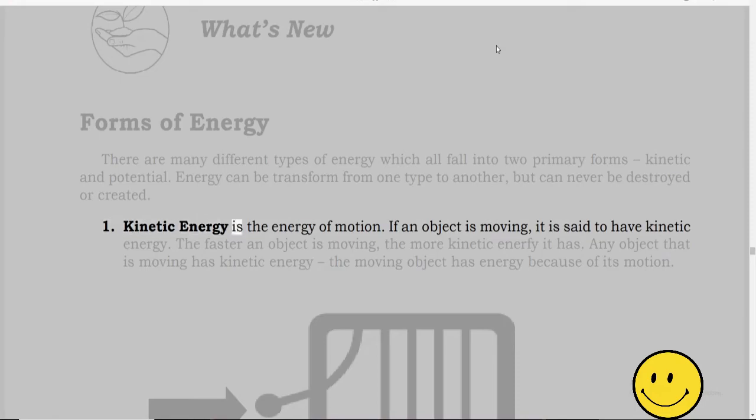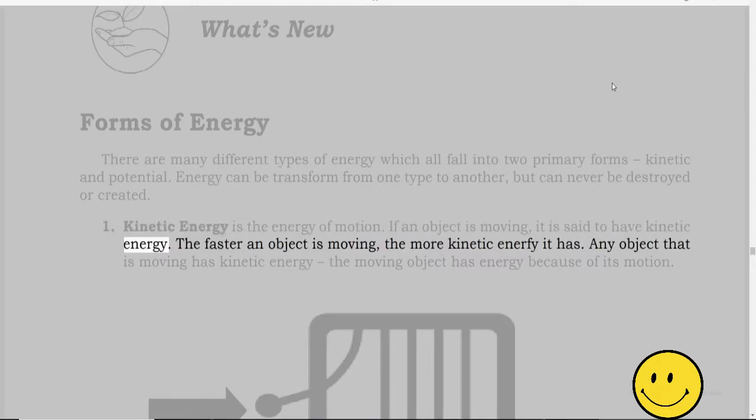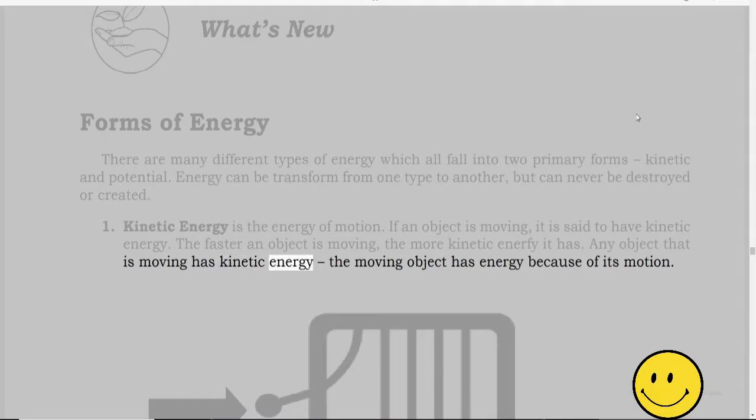Kinetic energy is the energy of motion. If an object is moving, it is said to have kinetic energy. The faster an object is moving, the more kinetic energy it has. Any object that is moving has kinetic energy, the moving object has energy because of its motion.